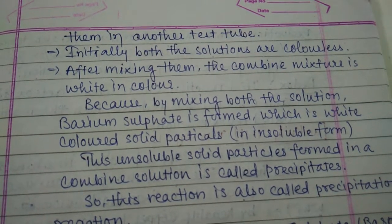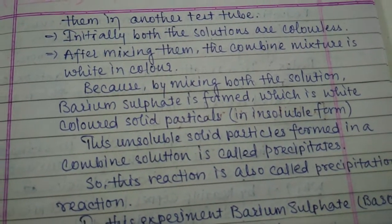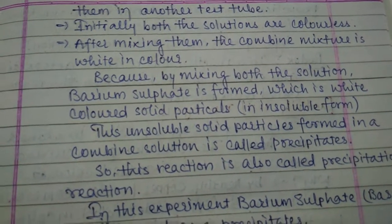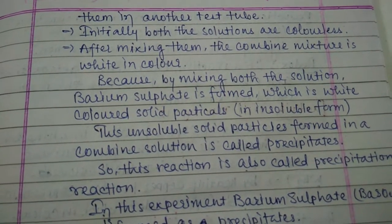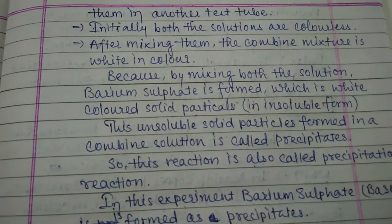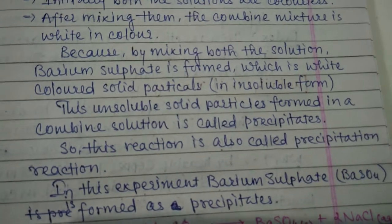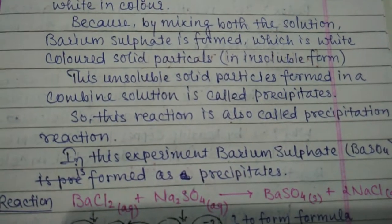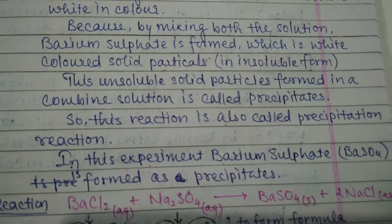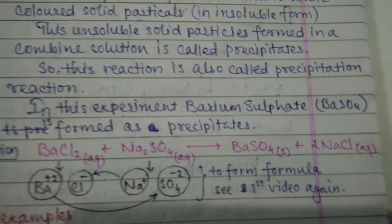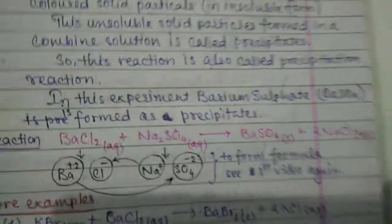After mixing the two solutions, the combined mixture appears white. This is because when both compounds mix, they form a precipitate — an insoluble substance. Here, barium sulfate is a white-colored salt formed in the solution. The insoluble solid particles formed in the combined solution are called precipitate, so this reaction is also called a precipitation reaction.